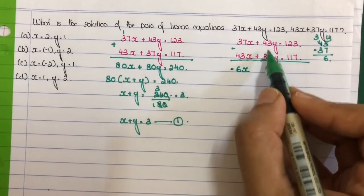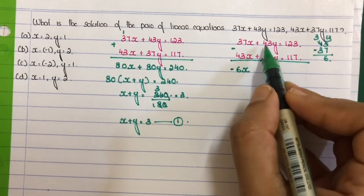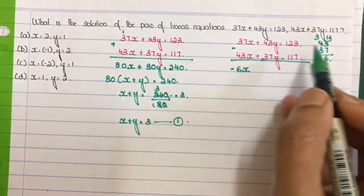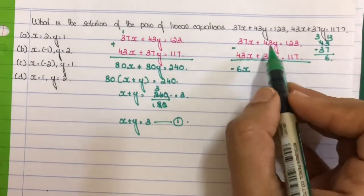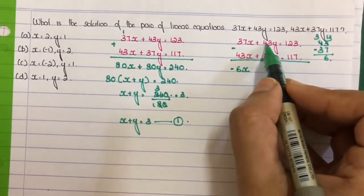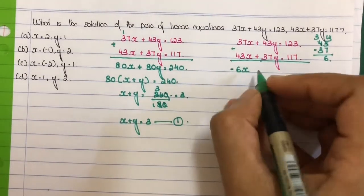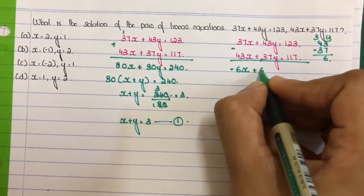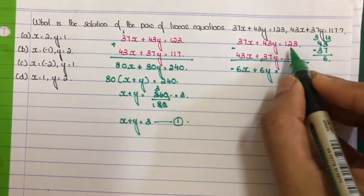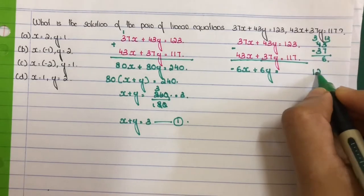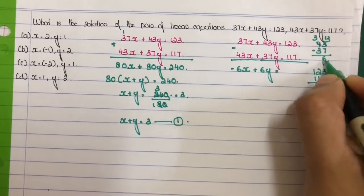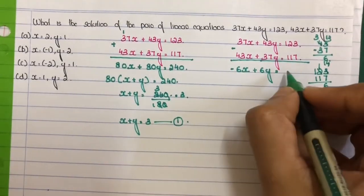Next, 43 minus 37. Here the bigger number is positive, so the answer is plus 6y. Plus 43 minus 37, the answer is plus 6y equal to 123 minus 117, which is 6.